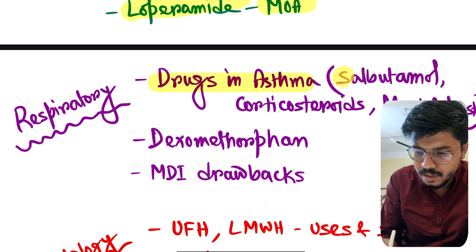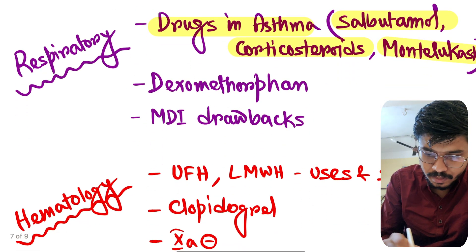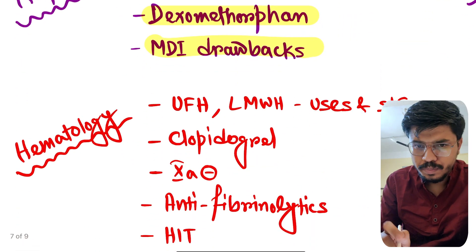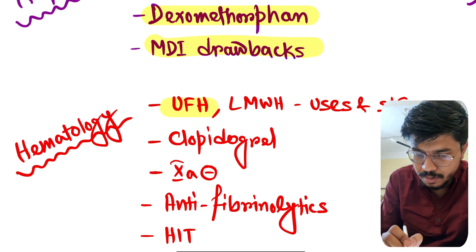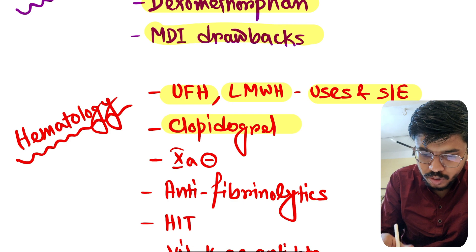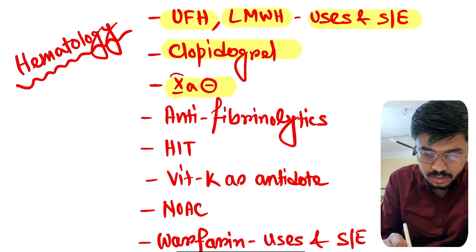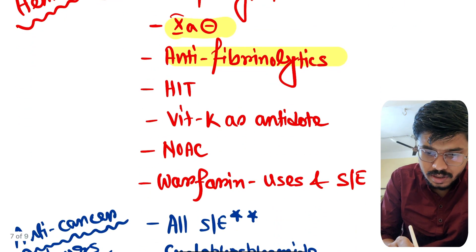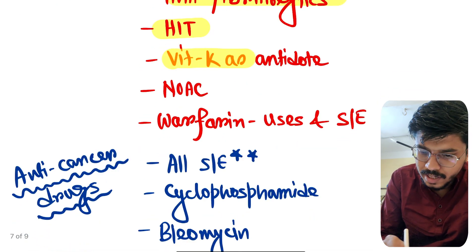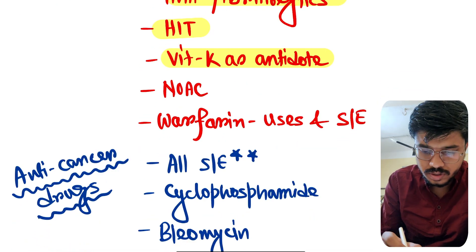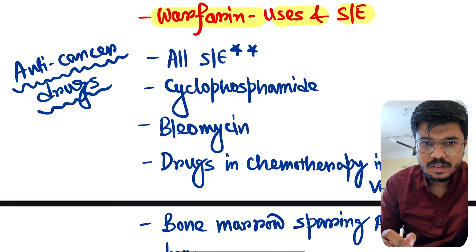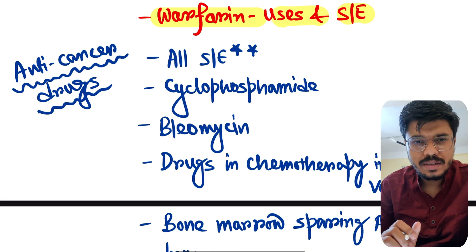From respiratory: drugs in asthma, especially salbutamol, corticosteroids, and montelukast. Dextromethorphan. MDI drawbacks. From hematology: unfractionated heparin and low molecular weight heparin uses and side effects. Clopidogrel. Factor Xa inhibitors. Anti-fibrinolytics. Heparin-induced thrombocytopenia — important topic. Vitamin K as an antidote in warfarin toxicity. Newer anticoagulants, warfarin uses and side effects.